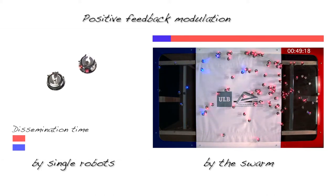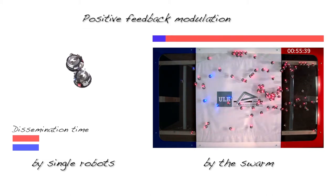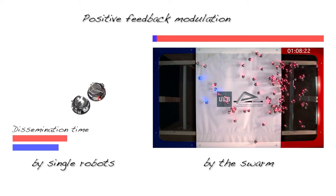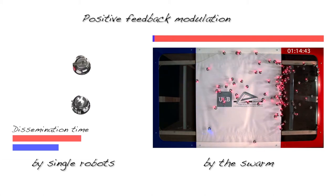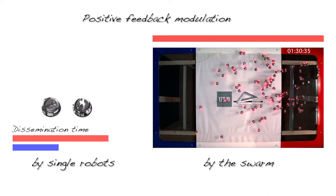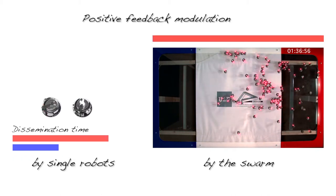Specifically, a robot promotes its preferred site for a time that is proportional to its current estimation of the site quality. This modulation mechanism introduces a positive feedback that over time leads the swarm to choose the highest quality site.